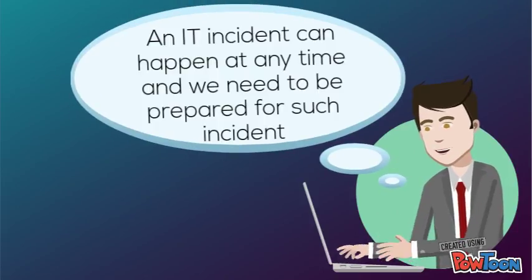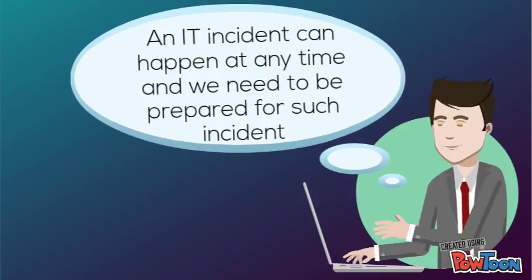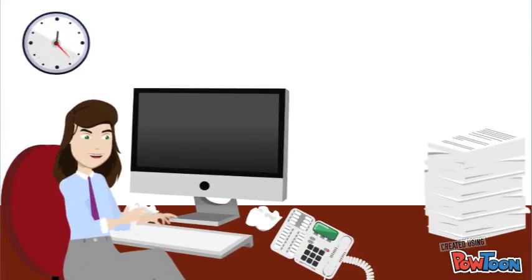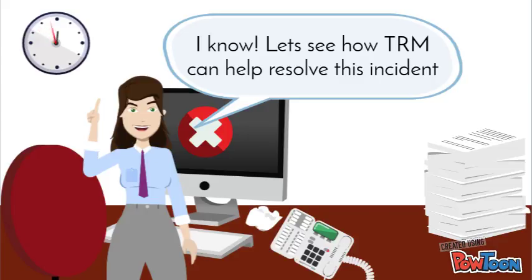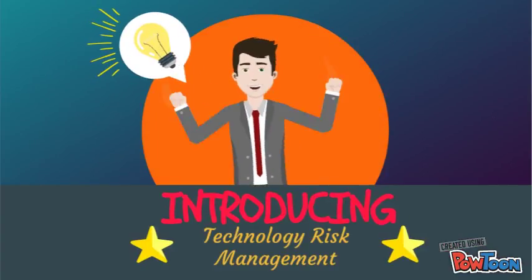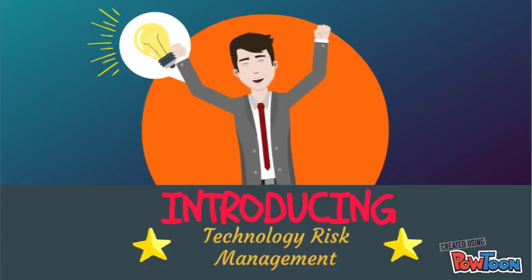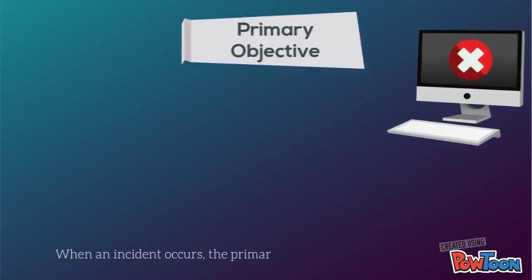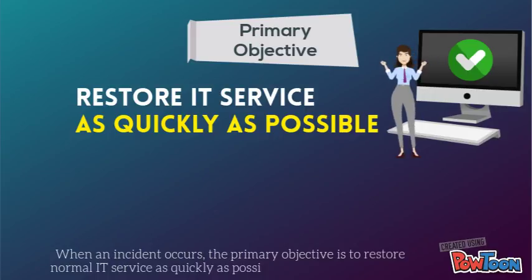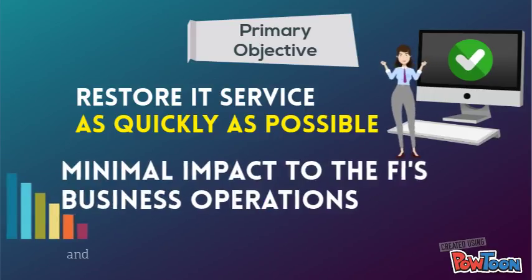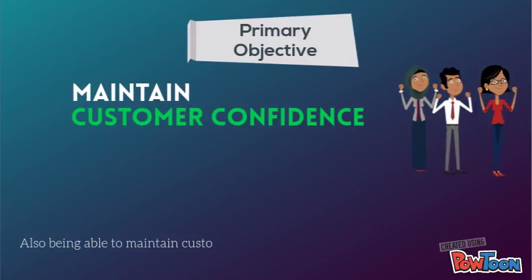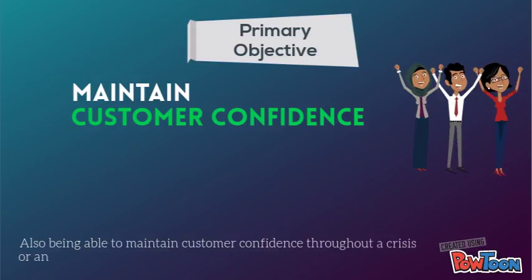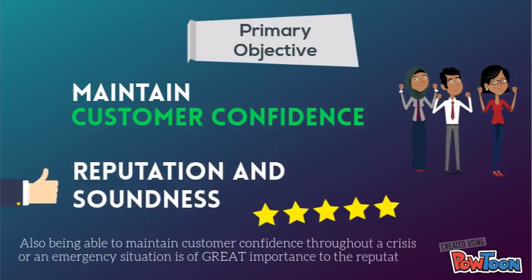An IT incident can happen at any time and we need to be prepared for such incidents. When an incident occurs, the primary objective is to restore normal IT service as quickly as possible following an incident and with minimal impact to the FI's business operations. Also, being able to maintain customer confidence throughout a crisis or an emergency situation is of great importance to the reputation and soundness of the FI.